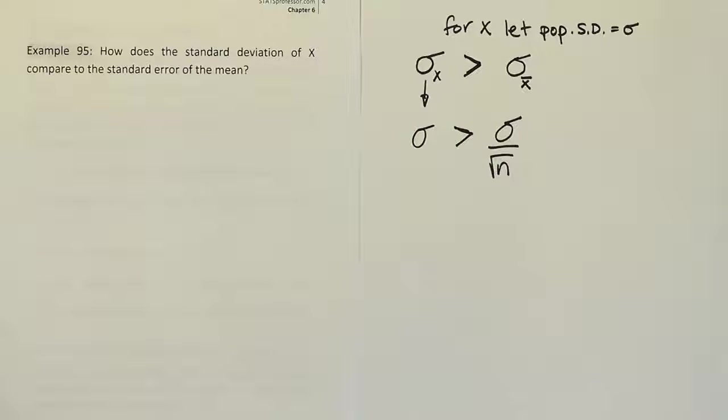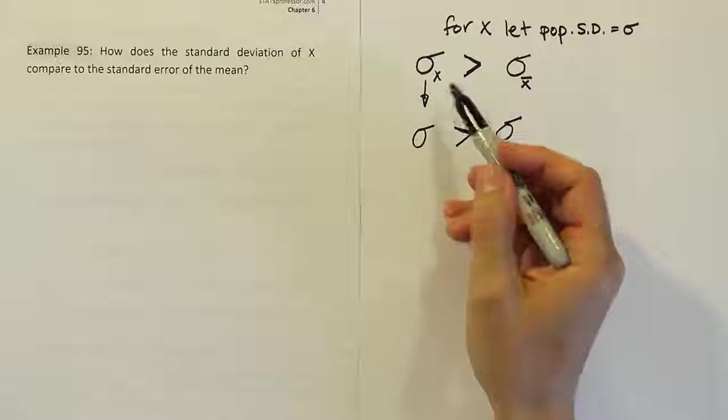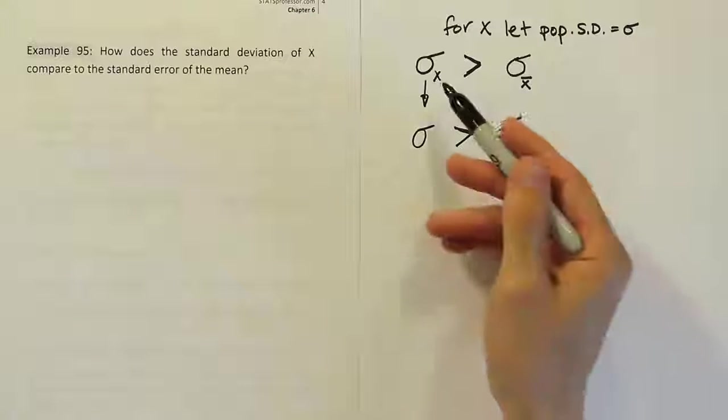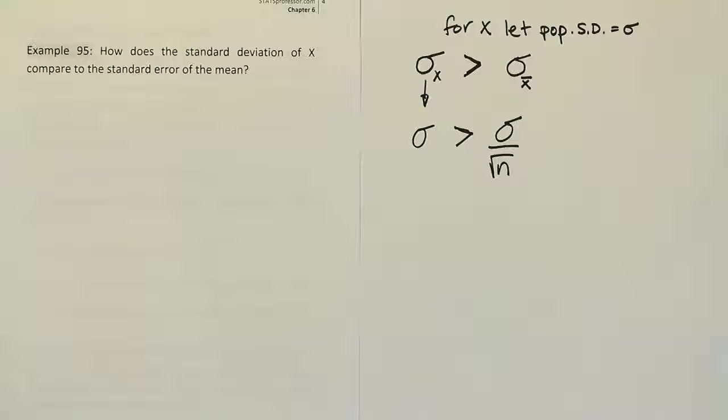That's the answer to the question here. Essentially, x̄ doesn't vary as much as the individual values of the variable x do. Groups, when you look at their averages, don't vary nearly as much as individuals.